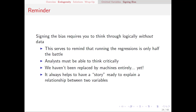I want to wrap up here by saying that everything that we've done in signing the bias, we did without data. We did not have data on ability, but we were able to think through it logically. This is an example of why the human element in regression is so important — running the regressions is only half of it. You still have to be able to think critically about what's going on. This is why I generally advise against hard and fast rules when it comes to regression, because there really aren't any — you have to be able to think through the interpretation. In general, it always helps to have what in regression analysis we call the story to explain the relationship between two variables. When you're presenting your results, it's usually not enough to just say it's positive or it's negative — you want to be able to tell your audience why you think that's happening.